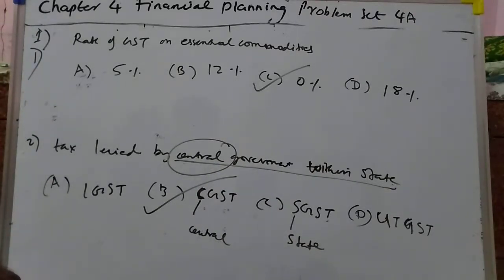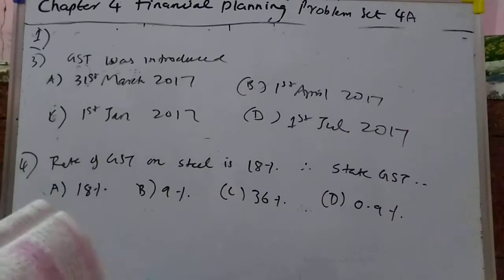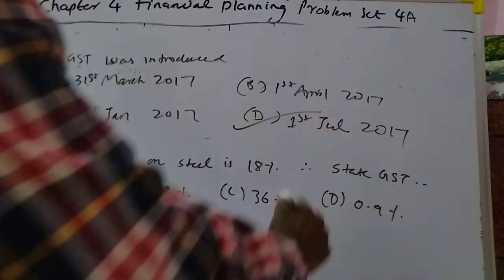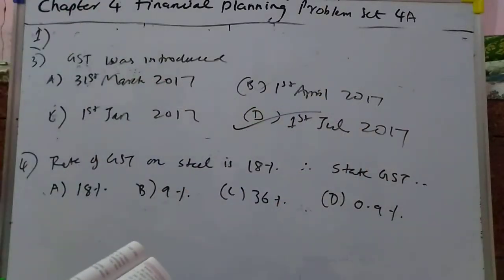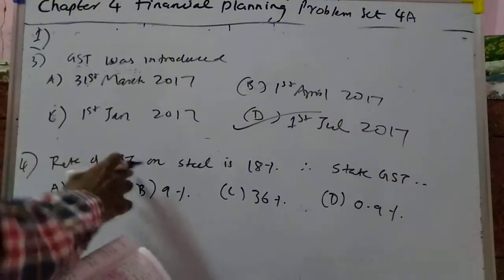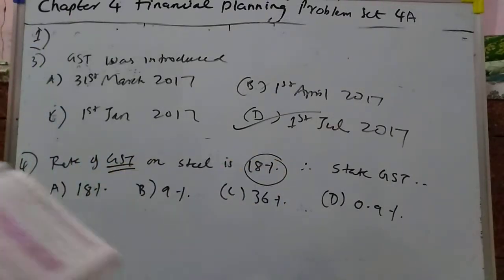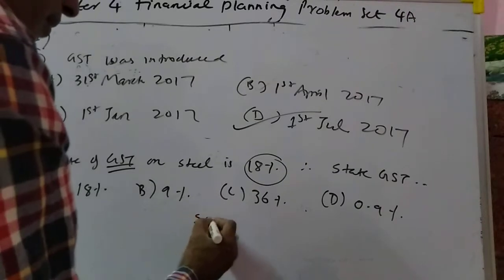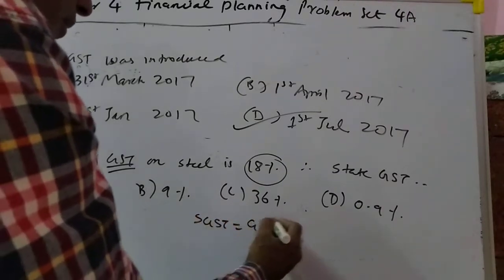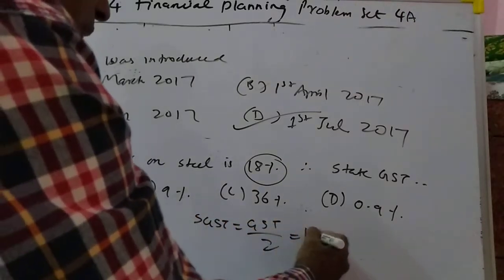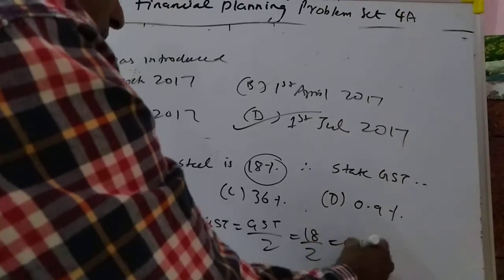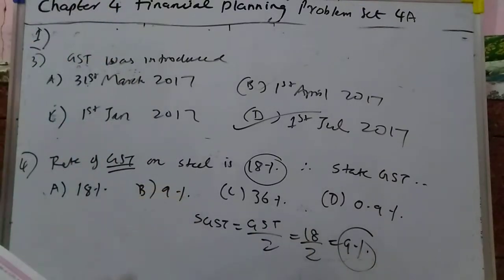Third: GST was introduced on 5th July 2017, and the rate of GST is 18%. GST is 18% means HGST is equal to GST divided by 2, so 18 divided by 2 is 9%. It is matching here, so you have to mark it.